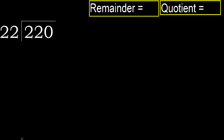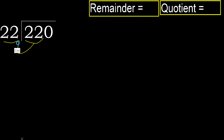220 divided by 22. 2 is less, therefore next. 22 is not less, therefore proceed with 22.